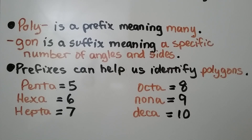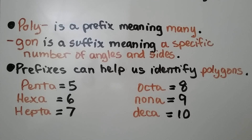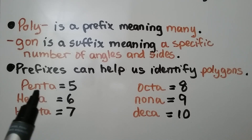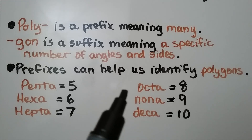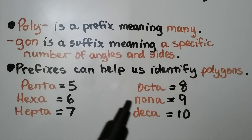Poly is a prefix meaning many. Gon is a suffix meaning a specific number of angles and sides. So if we have a polygon, we have shapes with a specific number of angles and sides. Prefixes can help us identify polygons: penta for five, hexa for six, hepta for seven, octa for eight, nona for nine, and deca for ten.